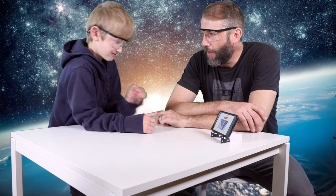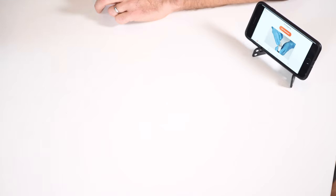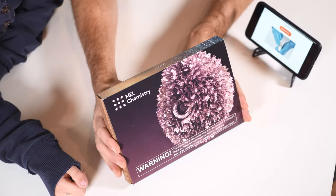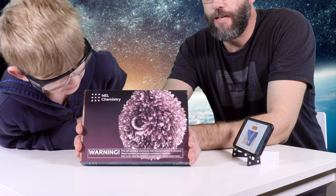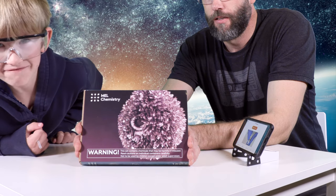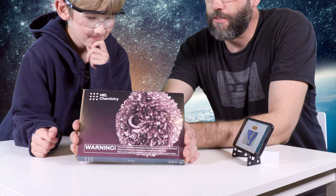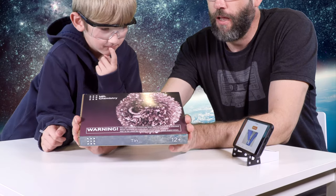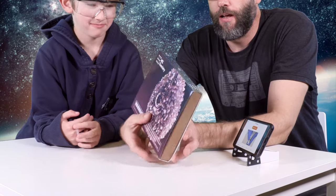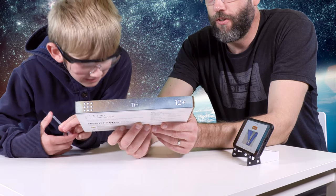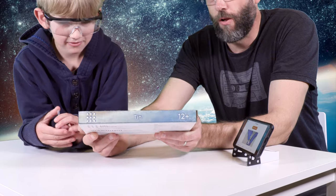What are we going to do today, bud? Tin. So what have we got here? This is the Tin Experiment. It has at least four warnings. Yes, it's got many warnings. This is the Tin Experiment from M.E.L. Chemistry. It's also 12 plus. And it's for people who are 12 plus. How old are you? Eight. I'm 42 so together we're well over 12.